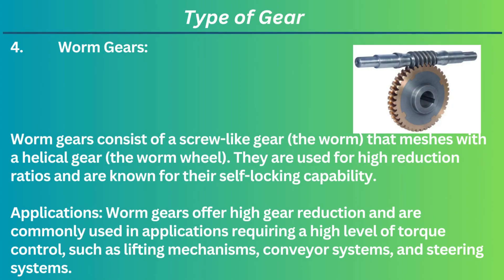4. Worm gears. Worm gears consist of a screw-like gear (the worm) that meshes with a helical gear (the worm wheel). They are used for high reduction ratios and are known for their self-locking capability. Applications: Worm gears offer high gear reduction and are commonly used in applications requiring a high level of torque control, such as lifting mechanisms, conveyor systems, and steering systems.